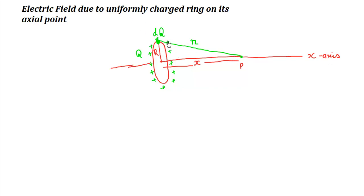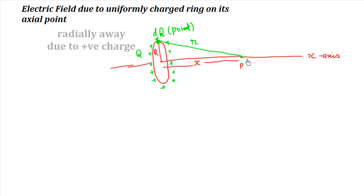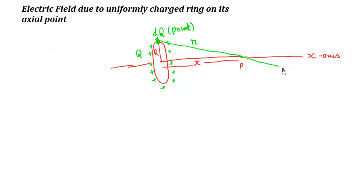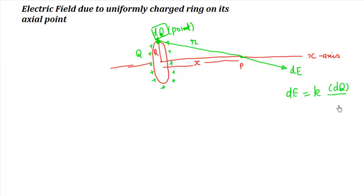This charge dQ is very small, so small that it can be considered as a point charge. Its field will be directed radially away from the charge itself. Being this charge is very small, the field due to it will also be very small. Let it be called dE, and dE equals K·dQ by R².